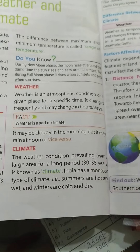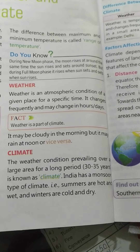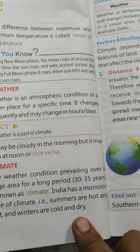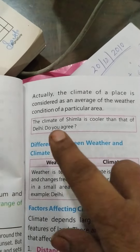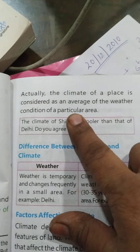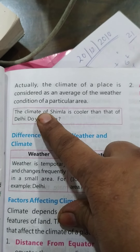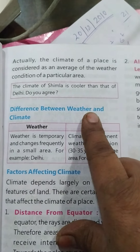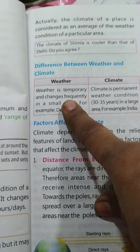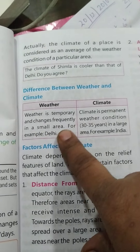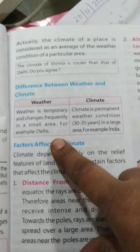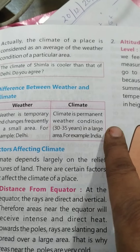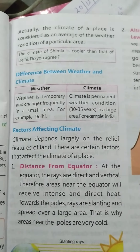India has a monsoon type of climate because summers are hot and wet while winters are cold and dry. Climate is considered the average weather conditions of a particular area. The difference between weather and climate: weather is temporary, changes frequently, and applies to a small area. Climate is permanent, based on weather conditions over 30 to 35 years.